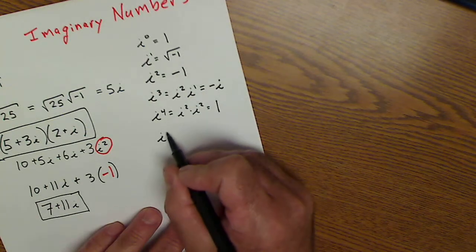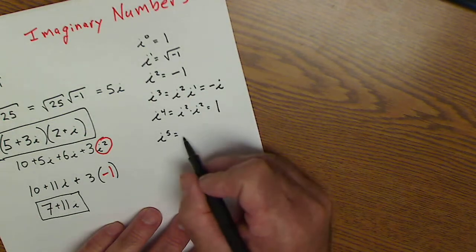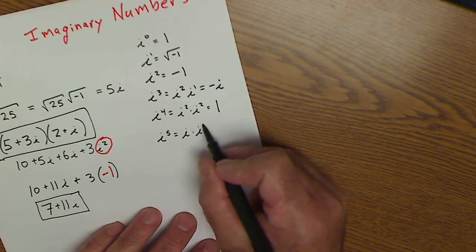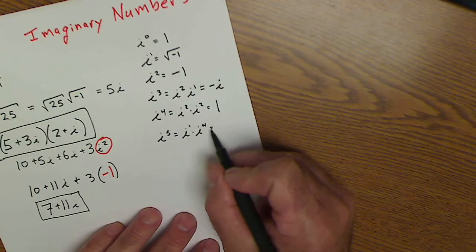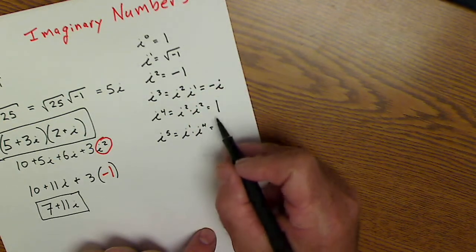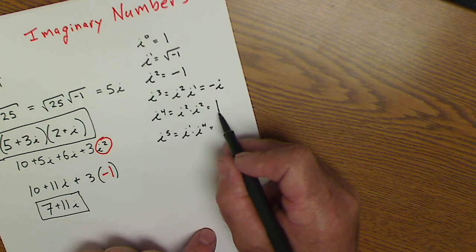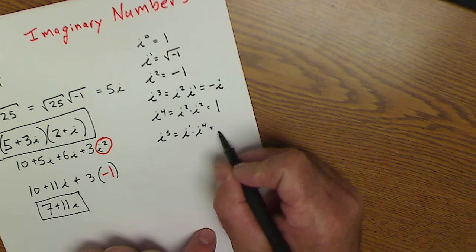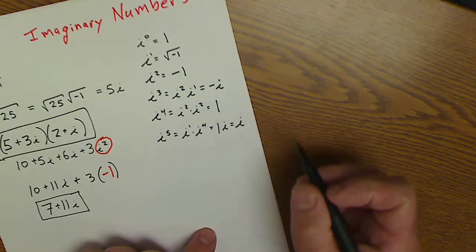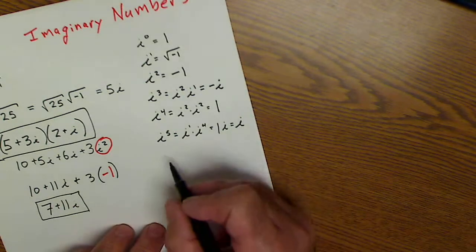i to the fifth would be equal to i to the first times i to the fourth. i to the first is just i. i to the fourth is 1. So i to the fifth is 1i, which is just equal to i. You start to see a pattern here.